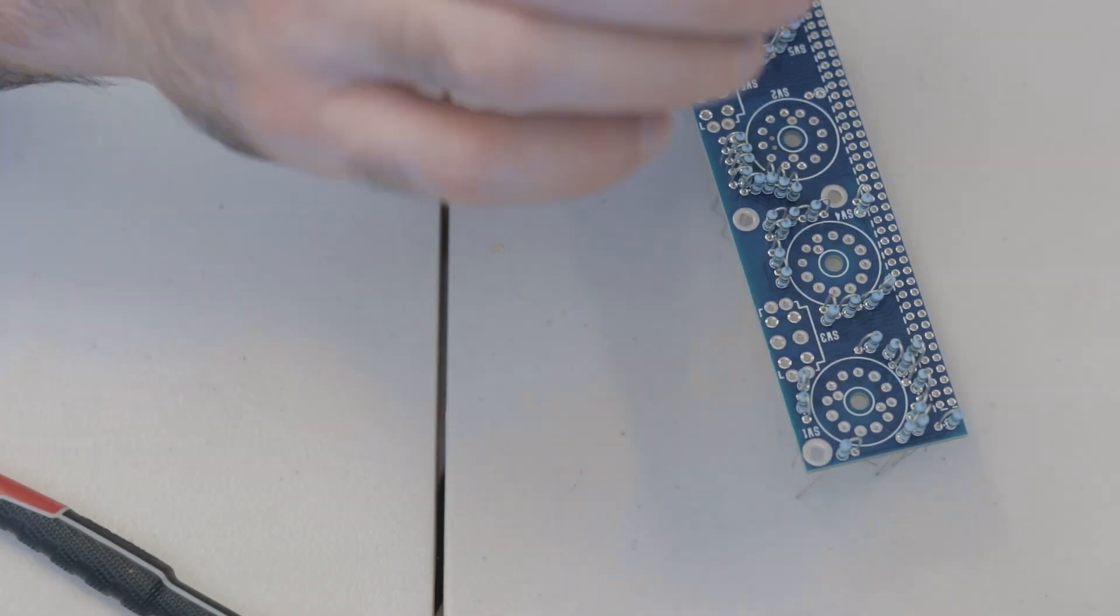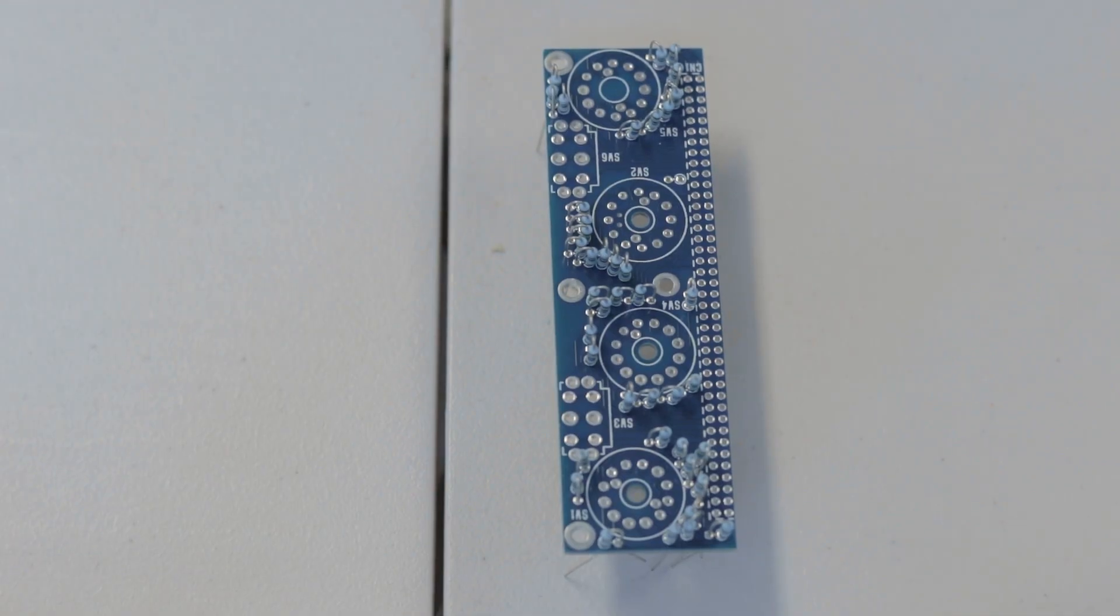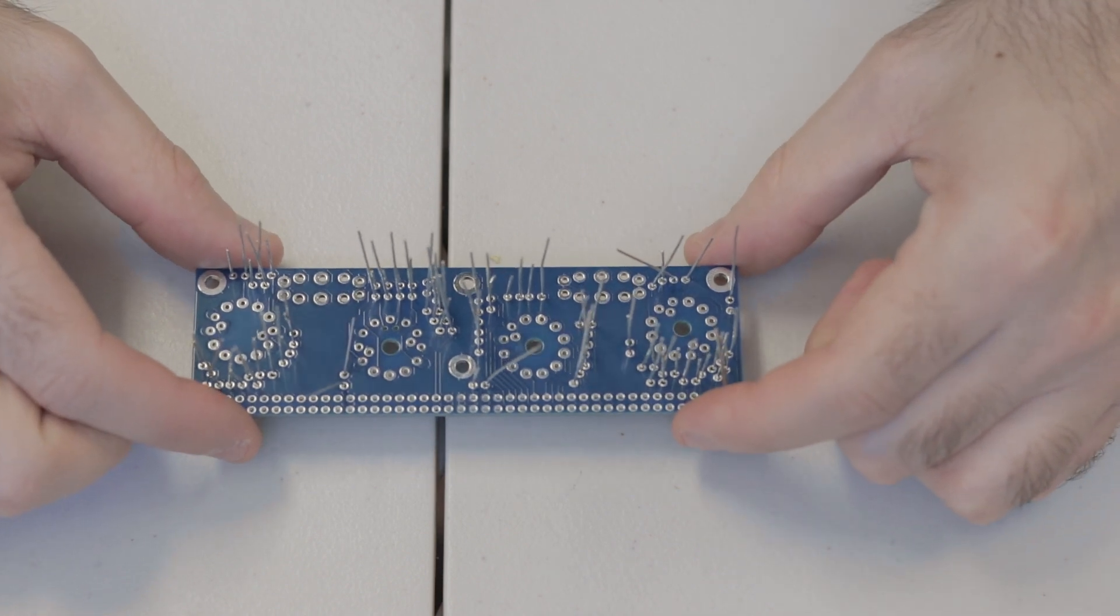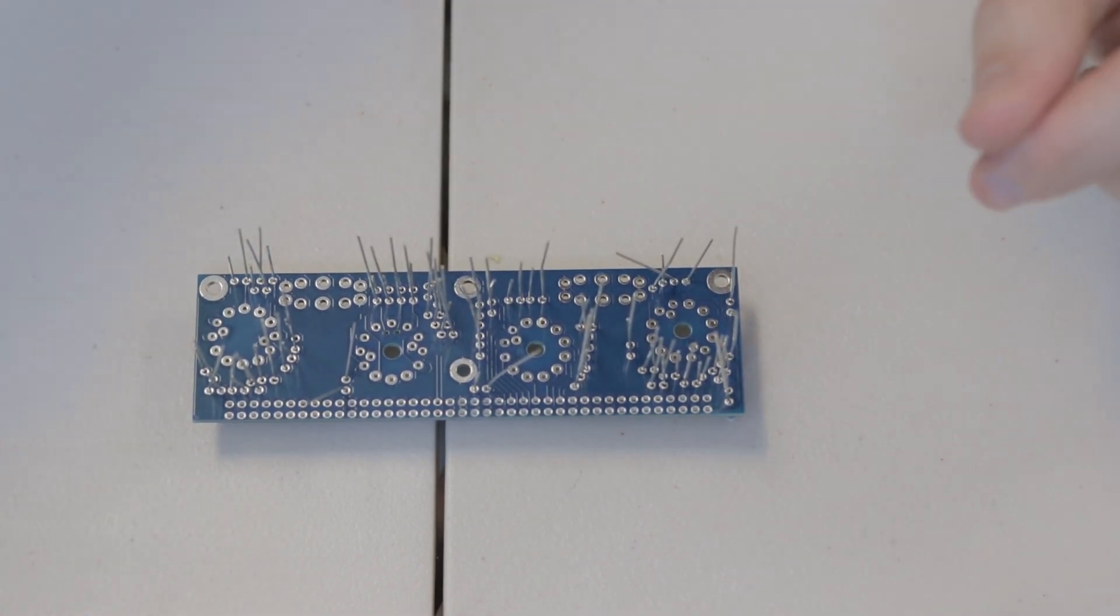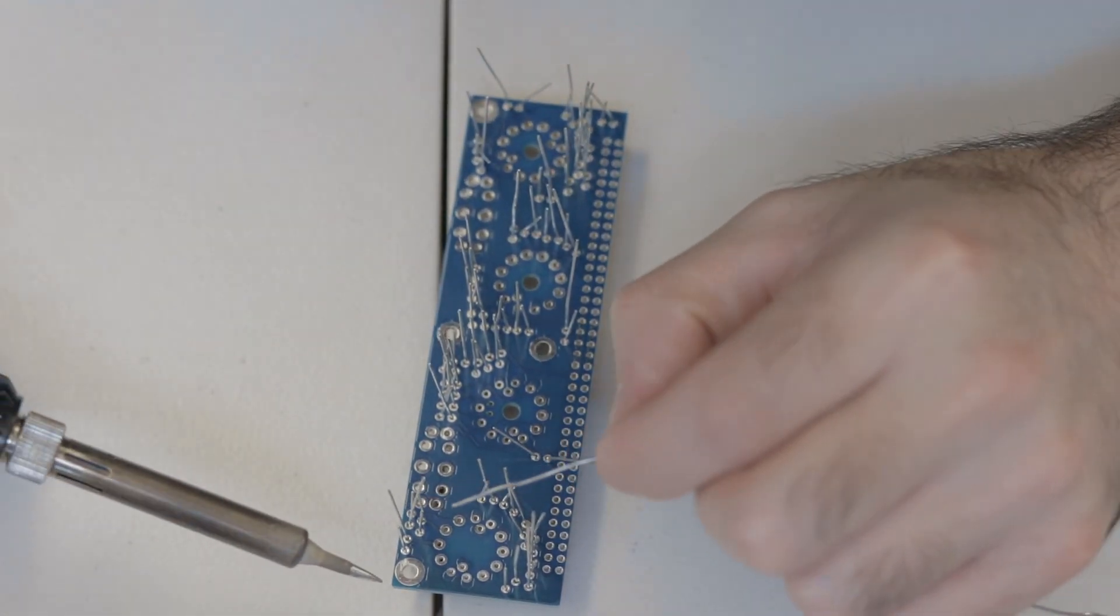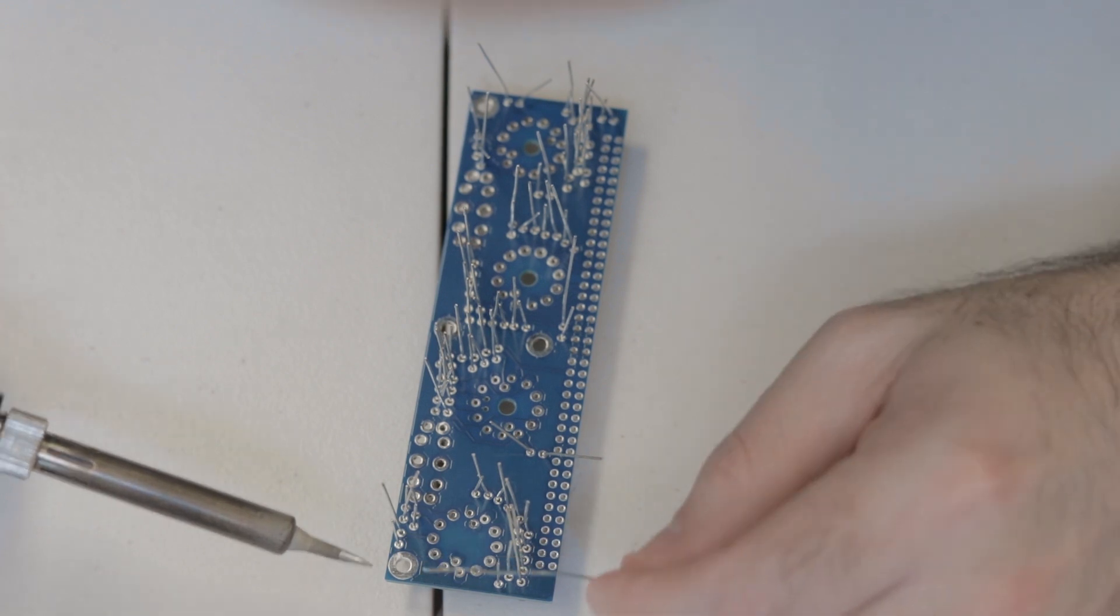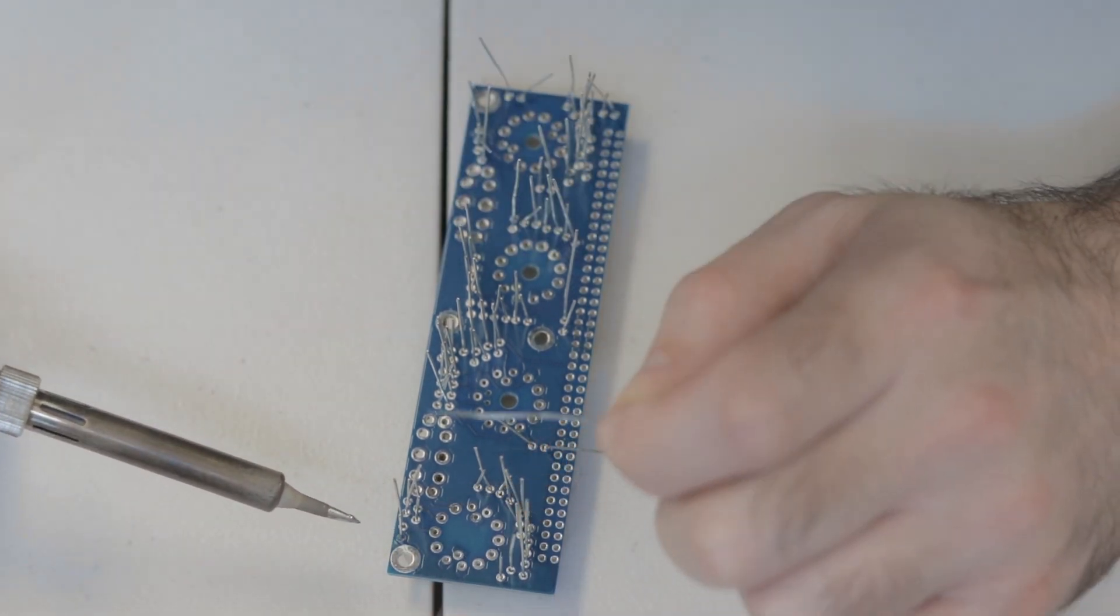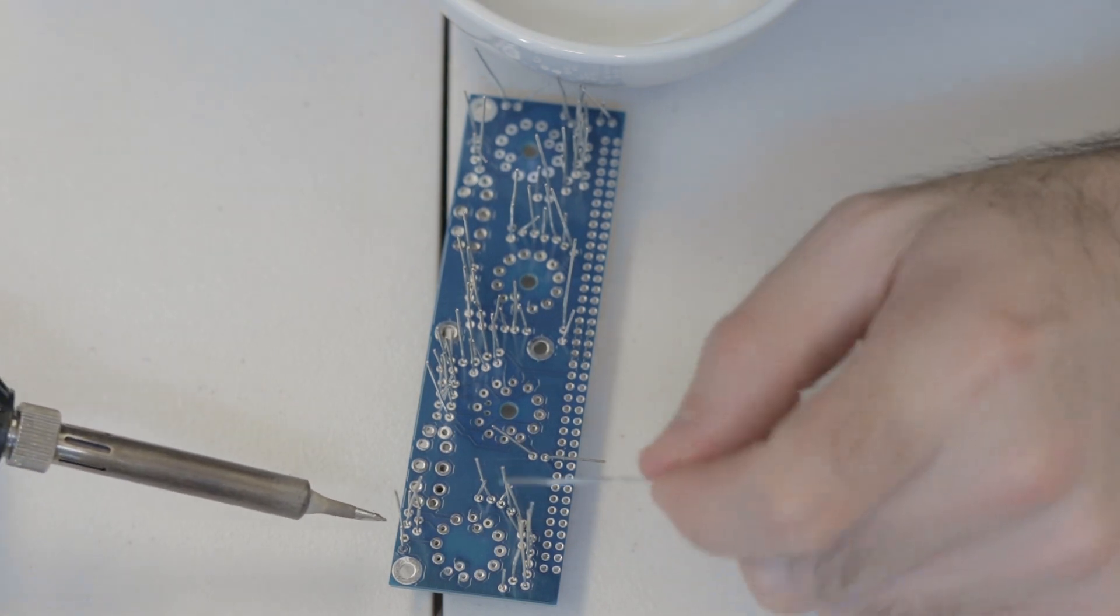And then once you've stacked all these vertical resistors, it's time to obviously solder the legs. So just flip the board over and you can start by soldering the legs that are easiest to get to, as I always do. And then clip the legs away that you've soldered, and then work your way in towards the other components.